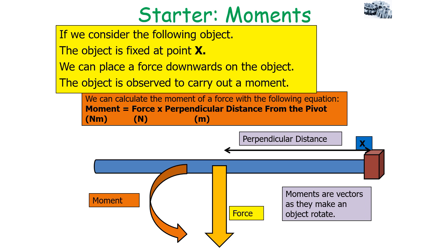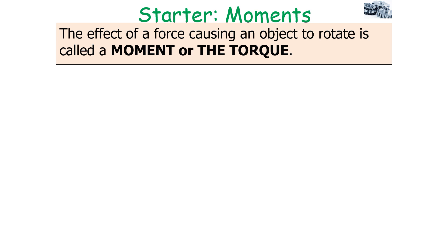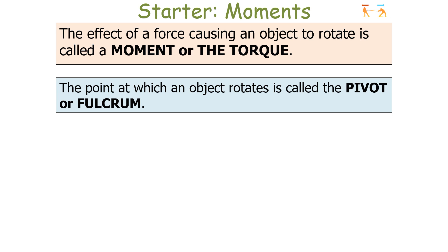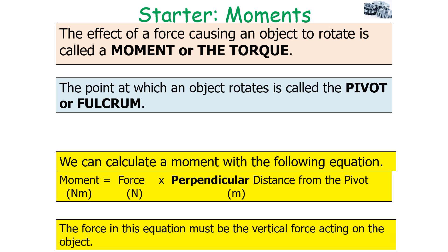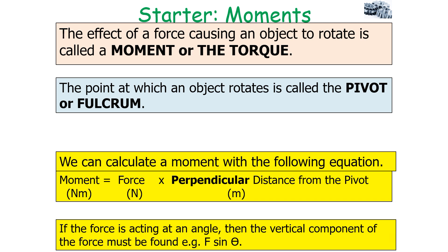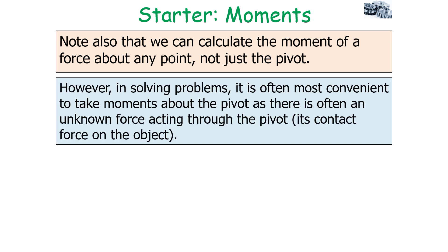Moments are vectors because they make an object rotate, so when calculating moments you must state the direction of rotation. The effect of a force causing an object to rotate is called a moment or torque, and the point at which an object rotates is called the pivot or fulcrum. We can calculate a moment about any point, not just the pivot. However, it's most convenient to take moments about the pivot, as there's often an unknown contact force acting through it — and since moment equals force times distance, if we take moments at the pivot the distance is zero, so we don't need to consider that force.